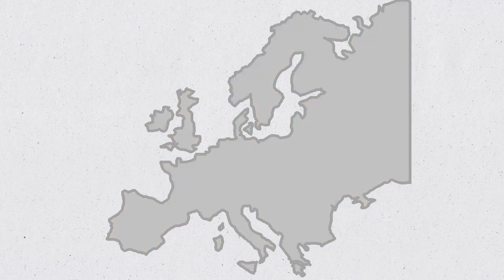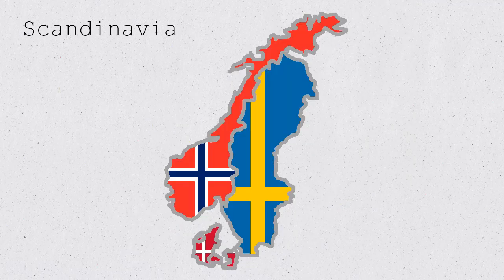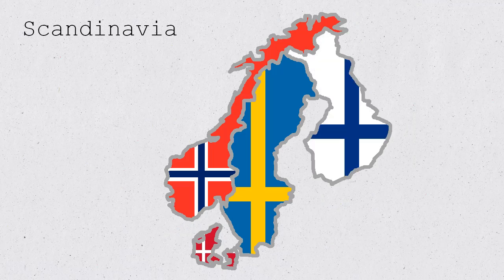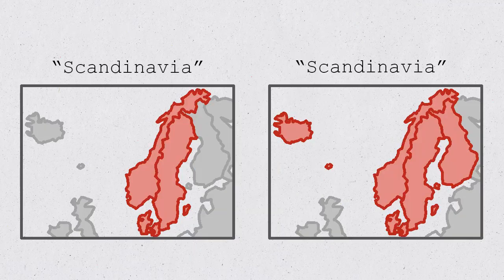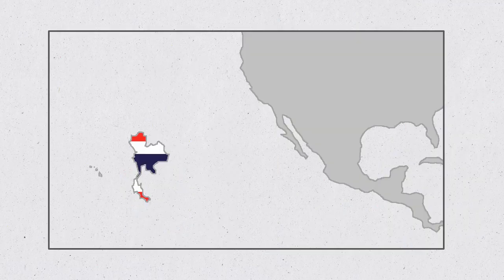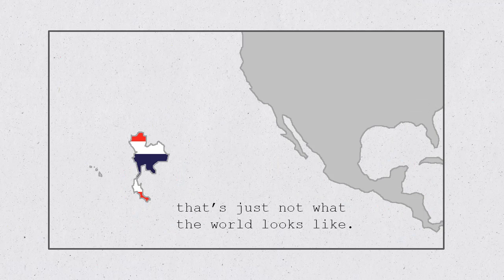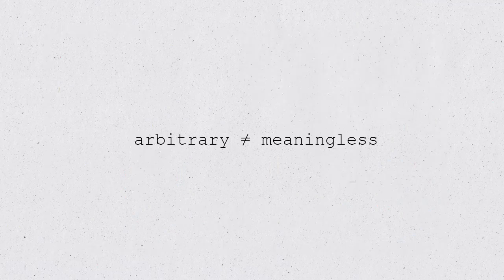But that doesn't change the fact that the actual land that we're dividing up and naming is a real thing that really exists and has a particular shape. You can draw a map of, say, Scandinavia that does or does not include Finland, depending on which definition of Scandinavia you think is most helpful. But no legitimate map has Thailand located just east of Hawaii, because that's just not what the world looks like. Arbitrary does not equal meaningless.